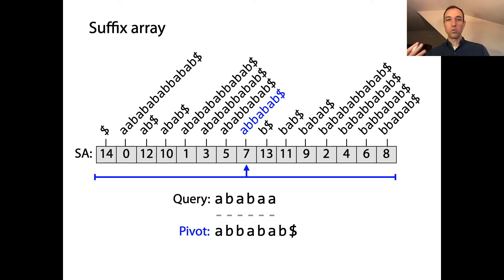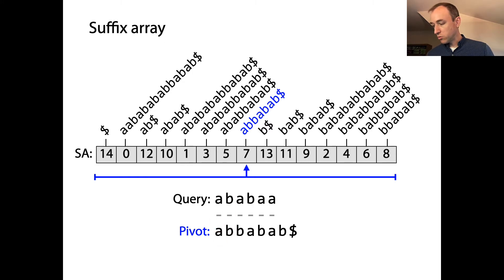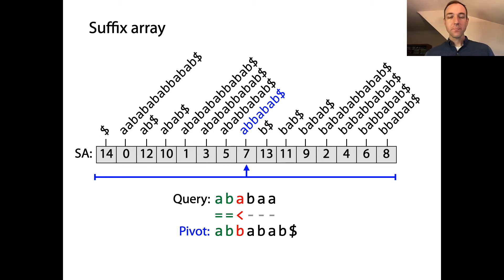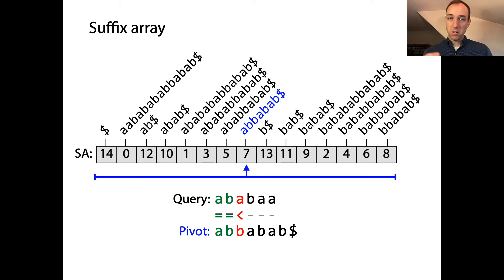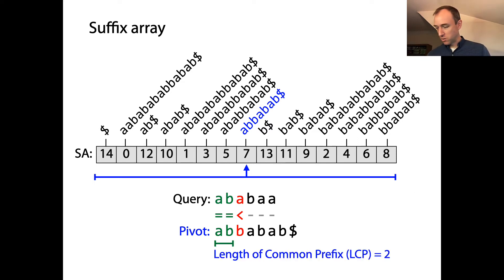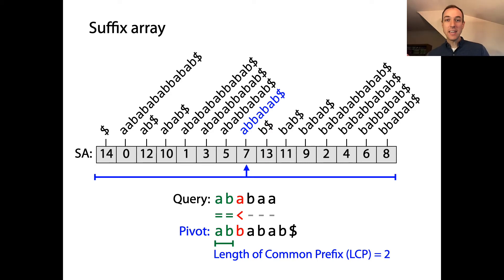I'm going to proceed doing my lexicographical character-by-character comparison, starting at the left and moving to the right. I'll see a match — A matches A, B matches B — so those first two will be matches. Then I'll see a mismatch, because that A in the query is less than the B in the pivot suffix. So I just compared my query to this blue suffix and found that the query is less than it, but I also found along the way that the query and this pivot have a common prefix of AB — a common prefix of length 2. The LCP is 2, where LCP means length of common prefix.